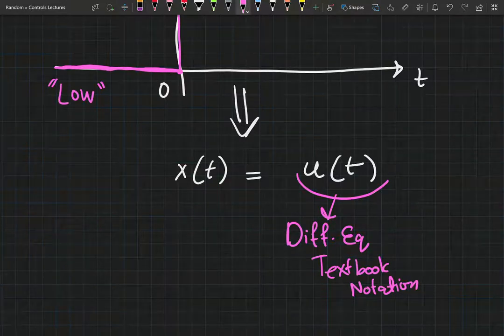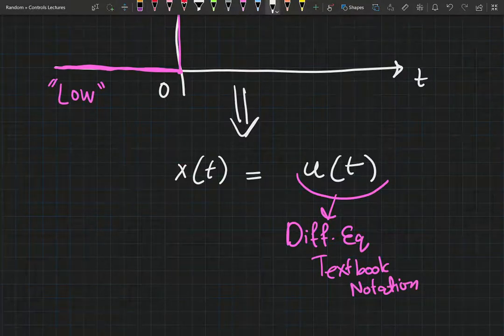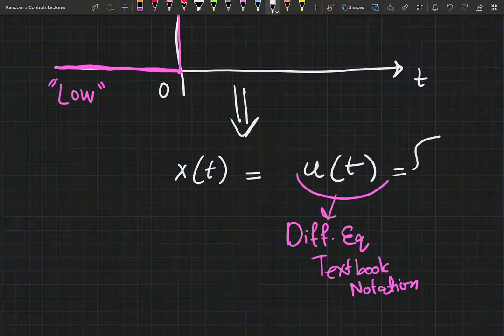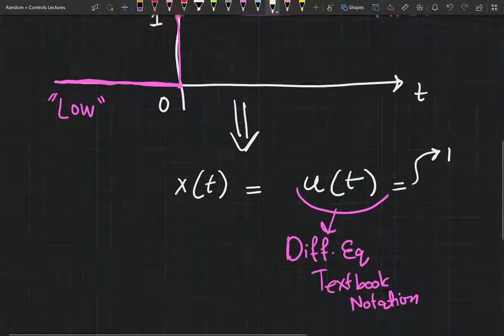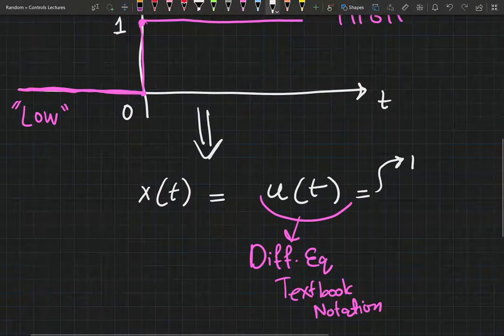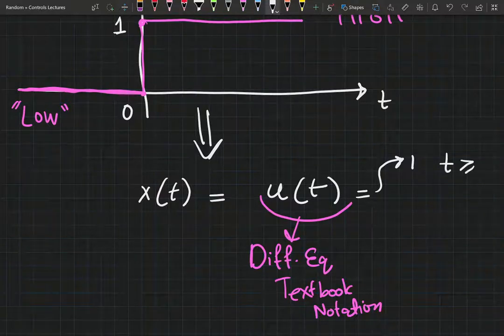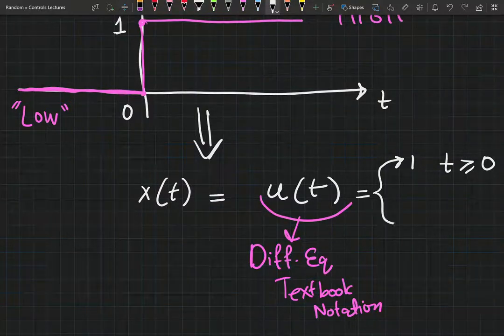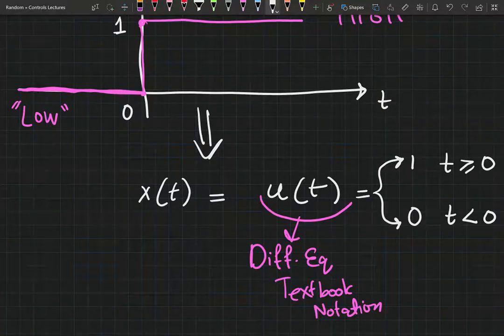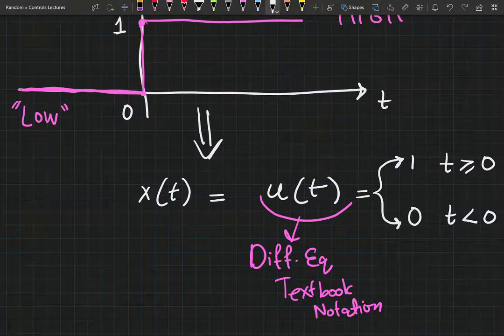And just to elaborate, u of t will be equal to one at t greater than or equal to zero. And u shall be equal to zero at t less than zero. So that's basically the very formal definition of the step function, also known as the Heaviside function.